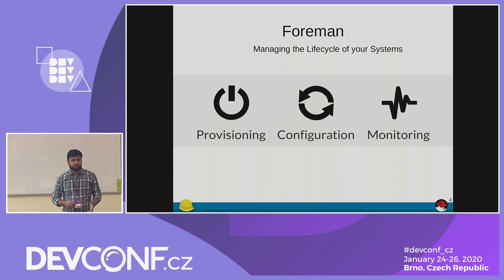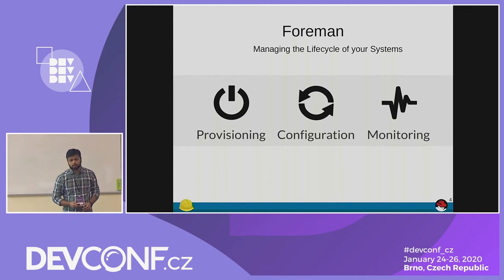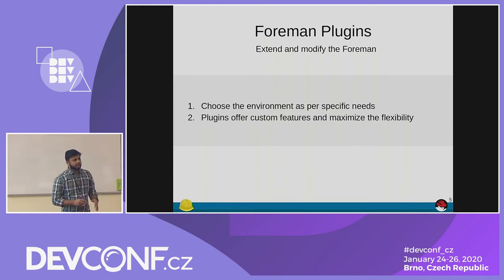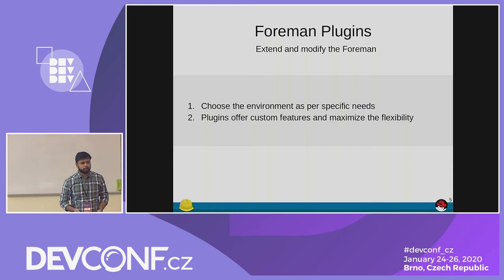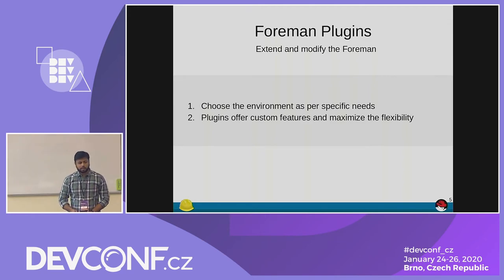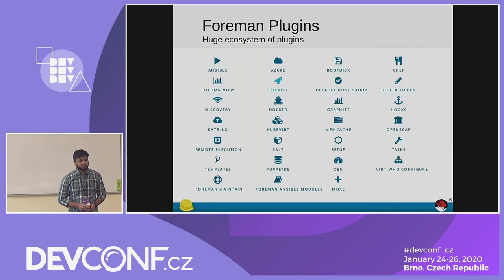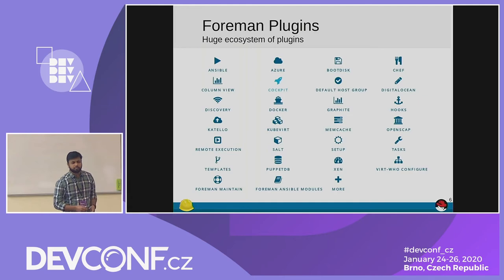And moving forward, based on the system facts, you can monitor your systems as well. Foreman has a plug-in architecture — choose what you want. If you want Ansible, if you want Puppet, whatever it is, just pull it and make it in production. This gives you more flexibility in how you want your production environment. It has a huge ecosystem starting with Ansible, Azure, Google Cloud, VMware, oVirt, and many more. You can see the whole list here.